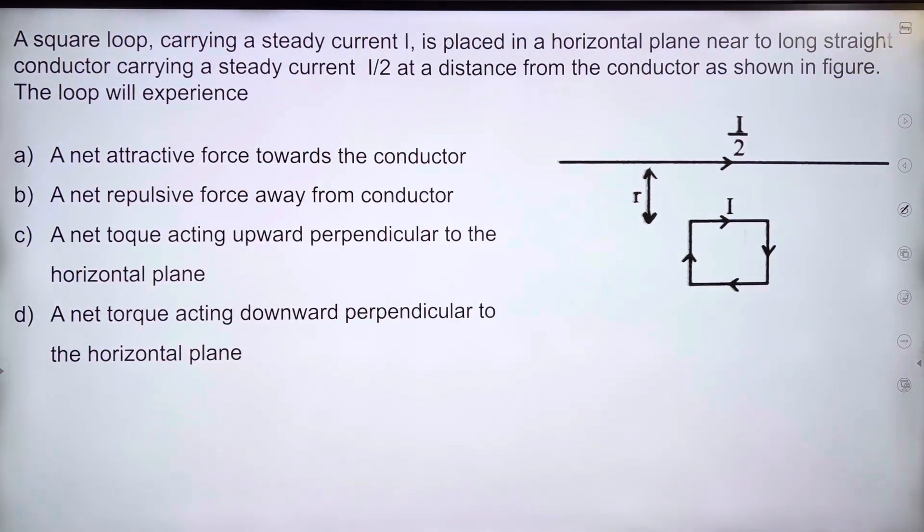The question is: a square loop carrying a steady current I is placed in a horizontal plane near a long straight conductor carrying a steady current I/2 at a distance from the conductor as shown in figure. The loop will experience...